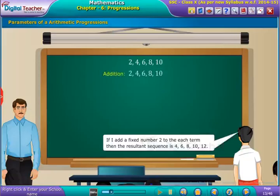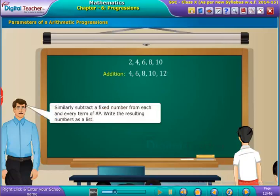If I add a fixed number 2 to each term, then the resultant sequence is 4, 6, 8, 10, 12. Similarly, subtract a fixed number from each and every term of AP.